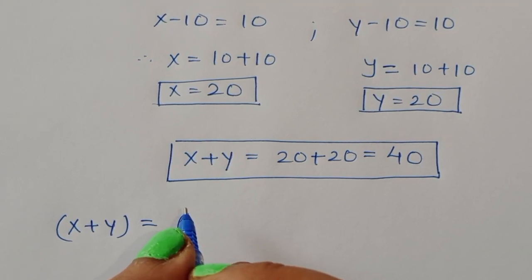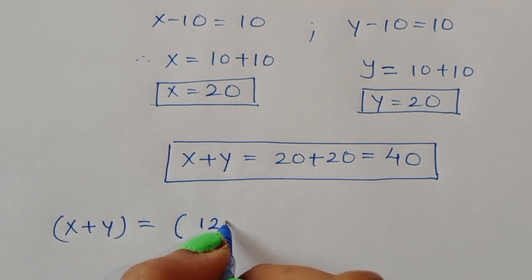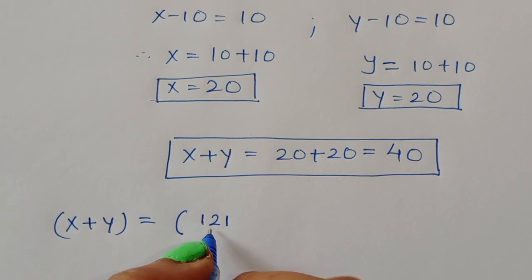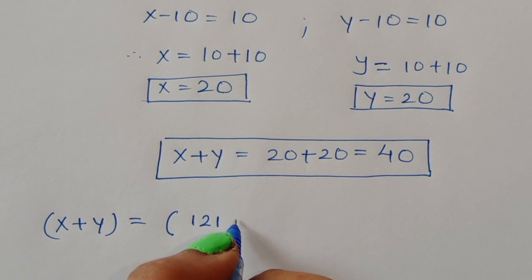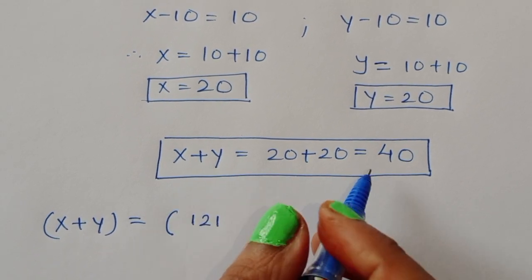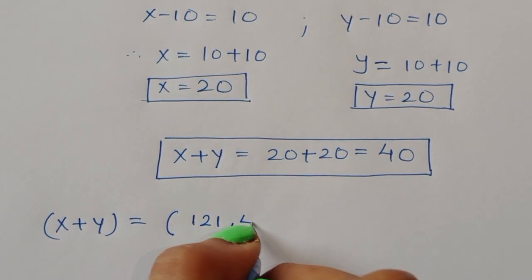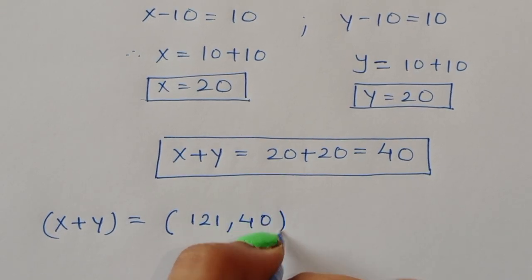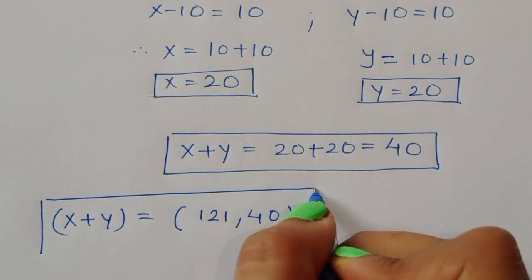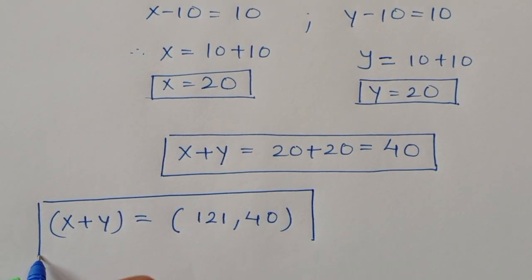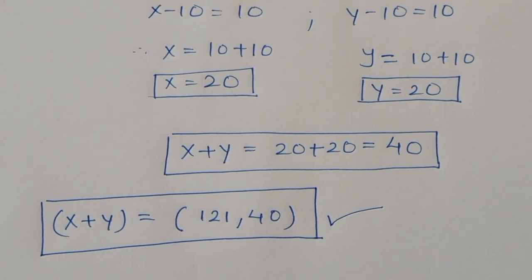In conclusion, the value of x plus y has two possible answers: 121 from cases 1 and 2, and 40 from case 3. This is the solution for this equation. Thank you.